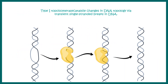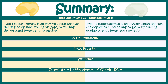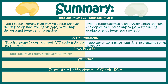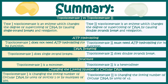Now let's summarize the differences between topoisomerase type 1 and type 2. Type 1 cuts only one strand whereas type 2 cuts both strands. Type 1 does not require ATP whereas type 2 requires ATP hydrolysis. Type 1 is a monomer whereas type 2 is a heterodimer. Regarding change in linking number — a parameter used to understand DNA topology — type 1 changes the linking number in steps of ±1, while type 2 changes it in steps of ±2.